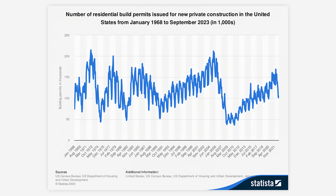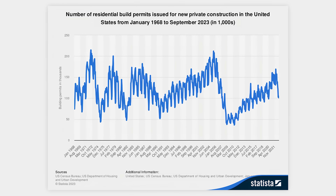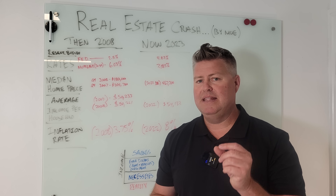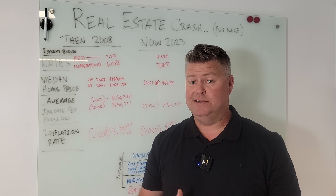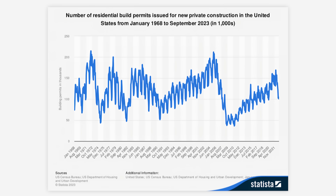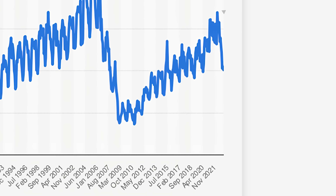This chart shows the number of residential build permits issued for new private construction in the United States from January 1968 to September 2023. One thing you'll first see is that Mo was right — a ton more residential real estate permits were pulled from 2001 to 2005. That's where the story begins. We peaked at 2005; everything started crashing mid-2005. We're looking at a decline from 2005 to where we bottomed at about the end of 2009. And looking at 2022 and 2023, starting in 2021, there's a massive decline in building permits.